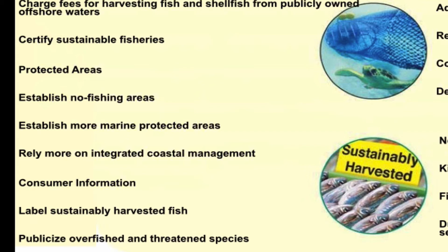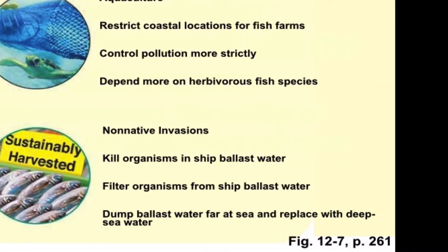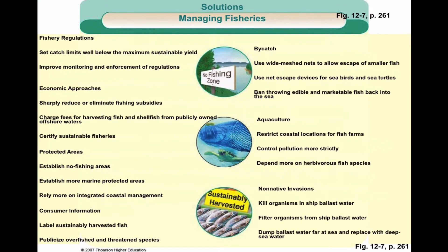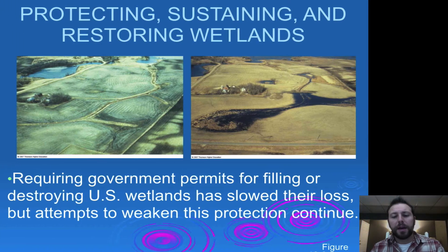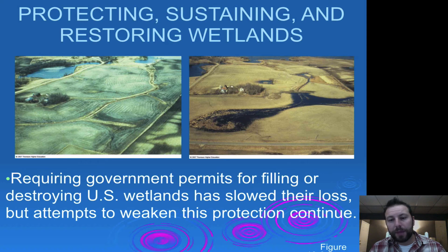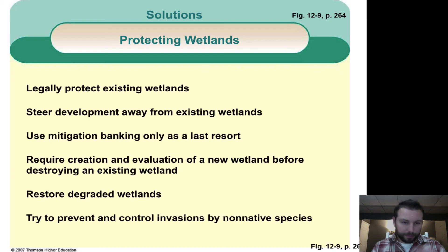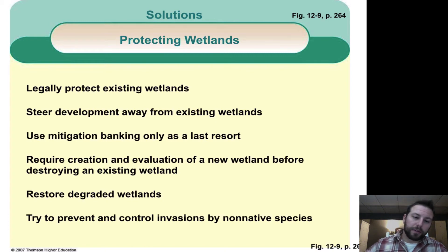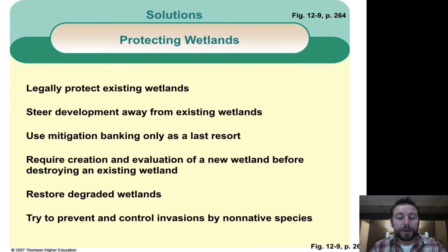Consumer information — letting people know — there are a lot of solutions we have to help out. Some things we have to worry about are non-native invasions killing organisms and ship ballast water. This list is pretty comprehensive; be familiar with some of these. Protecting our wetlands is definitely something we need to do — those wetlands are often being converted for agriculture, destroying quite a bit of habitat. We try to stop this, but it gets harder and harder. We can protect wetlands legally, steer development away from them, restore degraded wetlands, and prevent and control invasions by non-native species, which keep coming back to haunt us time and time again.